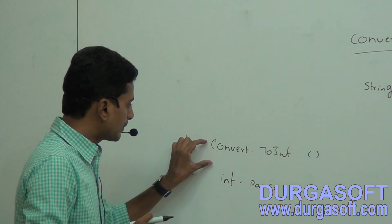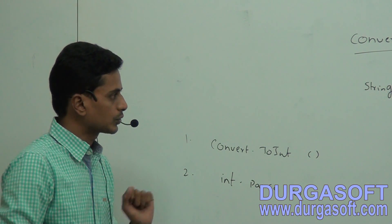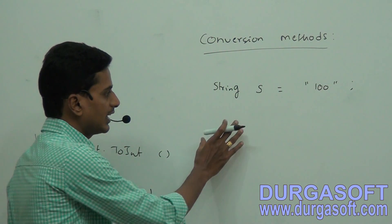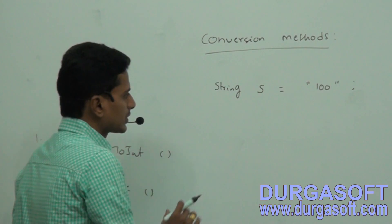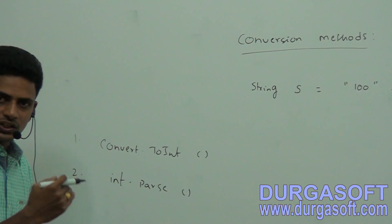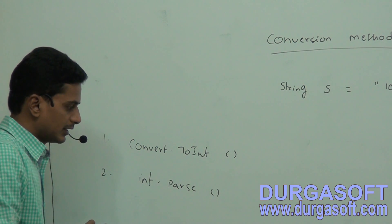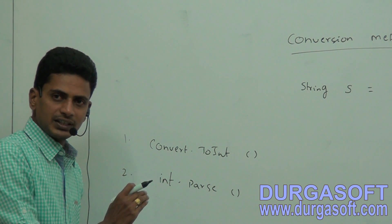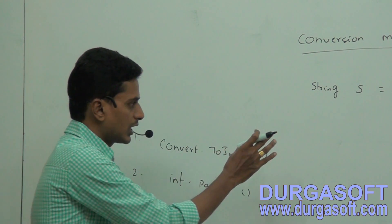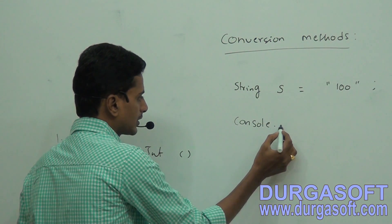Both these methods convert from string value to integer, but what is the main difference between Convert.ToInt32 and int.Parse? I would like to show that. I'm taking string s equal to '100' and I want to convert it to integer. I'll demonstrate using two console.WriteLine statements — one with each method.